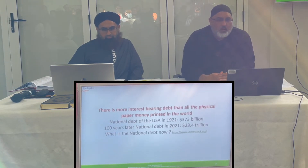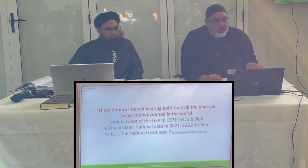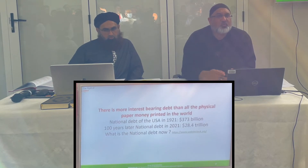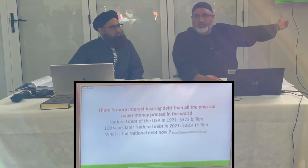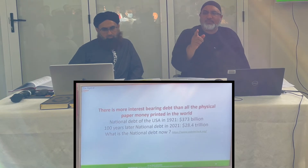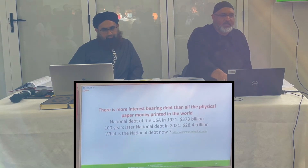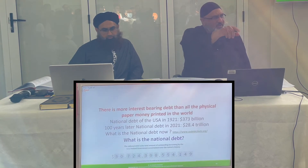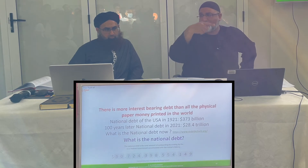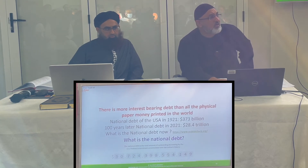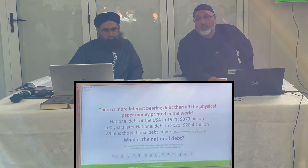So I ask you: is this fair? Is this all-consuming Western banking system predatory and oppressive, or is it natural and normal? There is more interest-bearing debt than all the physical paper money in the world — let that sink in. There is more debt than actual printed cash. The national debt of the USA in 1921 was 373 billion; 100 years later it is 28 trillion. The nation owes this to those who bought its debt — including Middle East governments buying US treasuries.